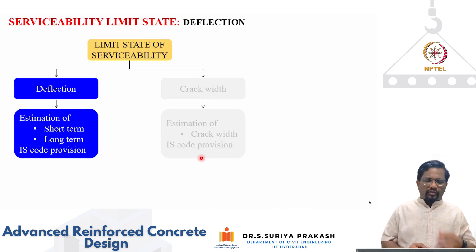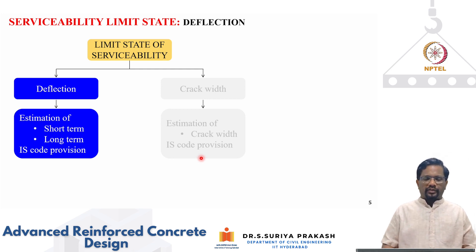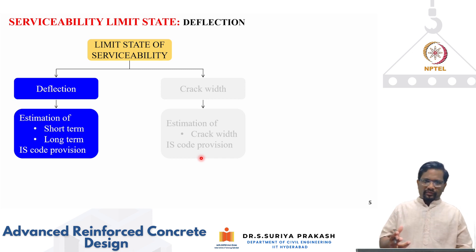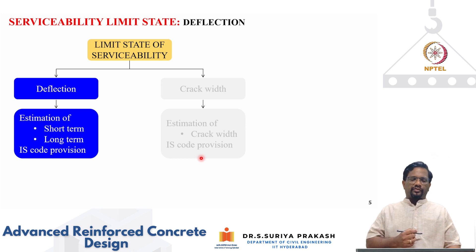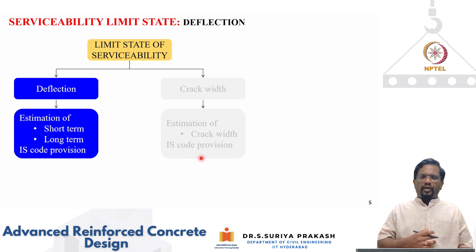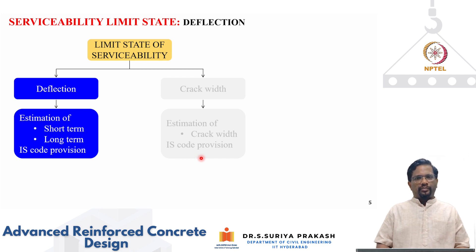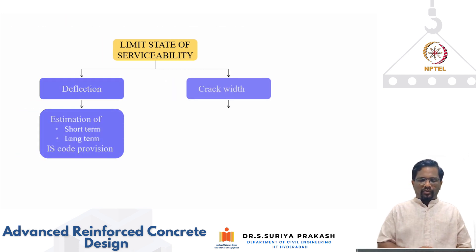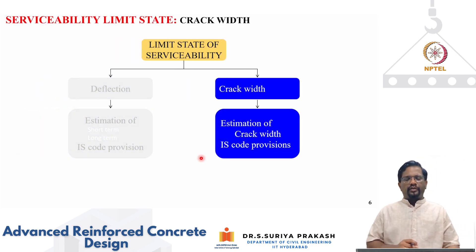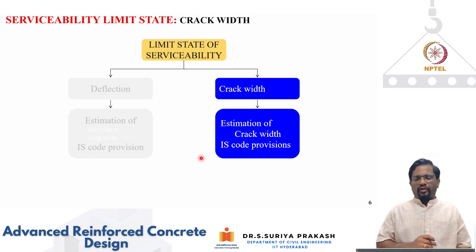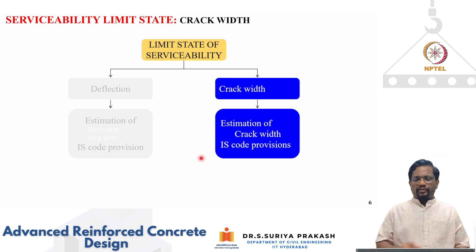In the limit state of serviceability, we focus on two major things. One is deflection — including estimation of short-term deflection, long-term deflection, and IS code provisions discussed in the last part of the module. In this module, we are going to focus on crack width and particularly how to estimate crack width using IS 456 code provisions.